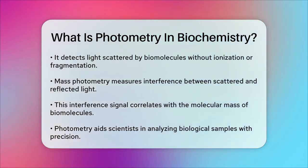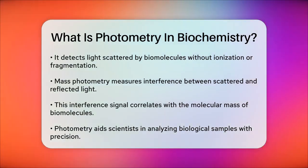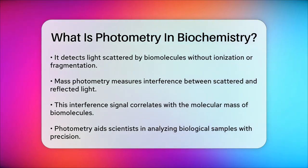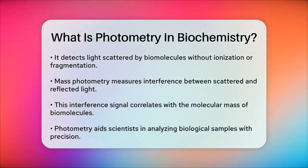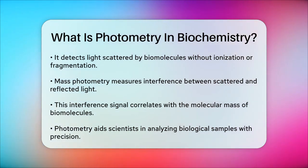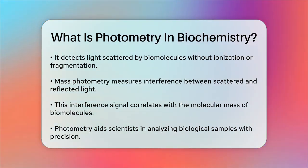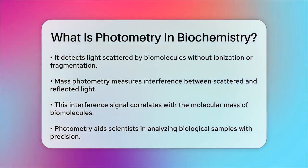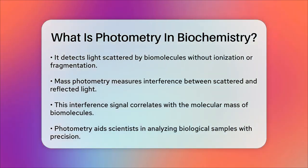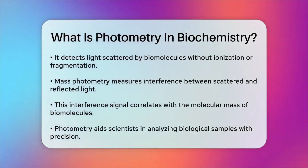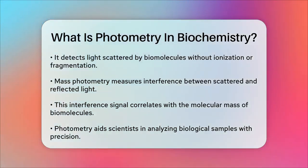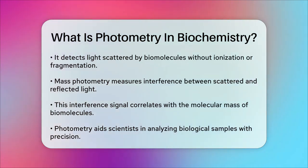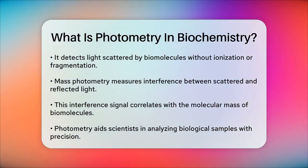In summary, photometry in biochemistry is a powerful tool for measuring the concentration of substances in solutions and studying the properties of biomolecules. Whether it's through traditional absorbance measurements or the newer mass photometry technique, photometry helps scientists understand and analyze biological samples with great precision.